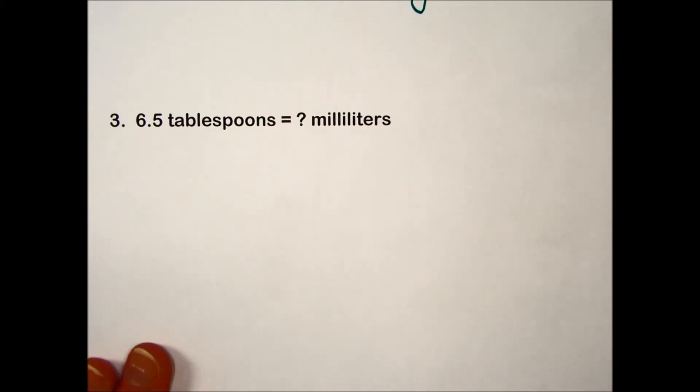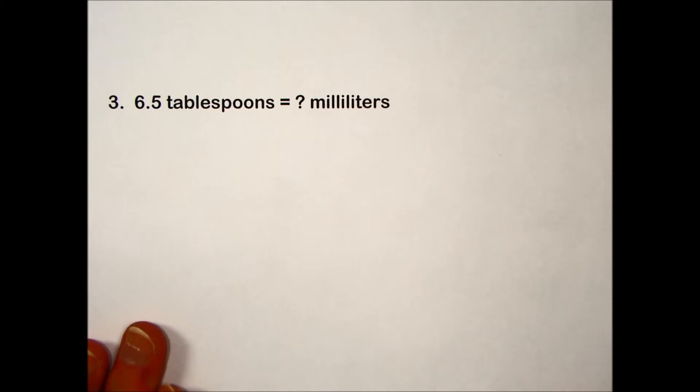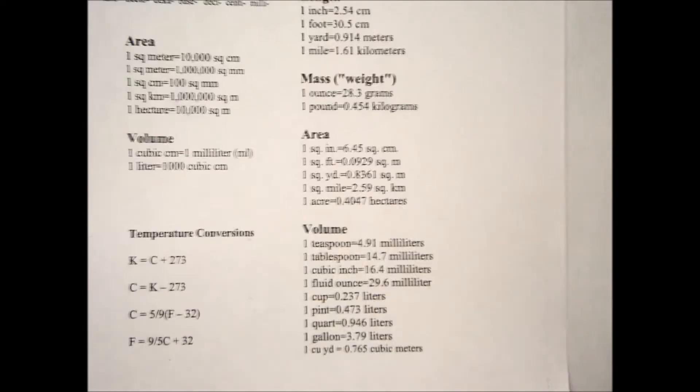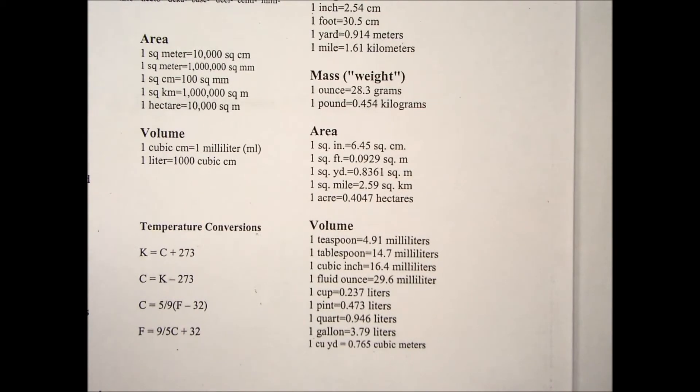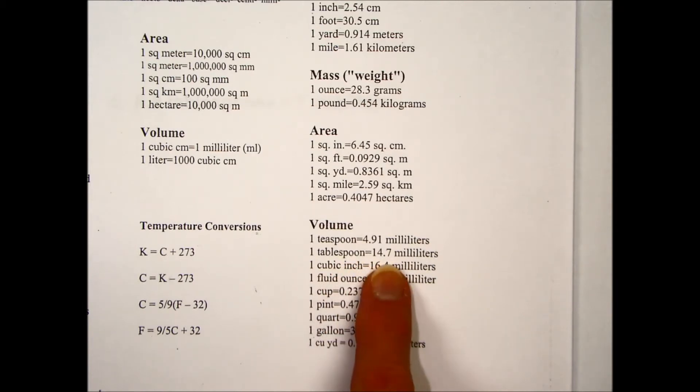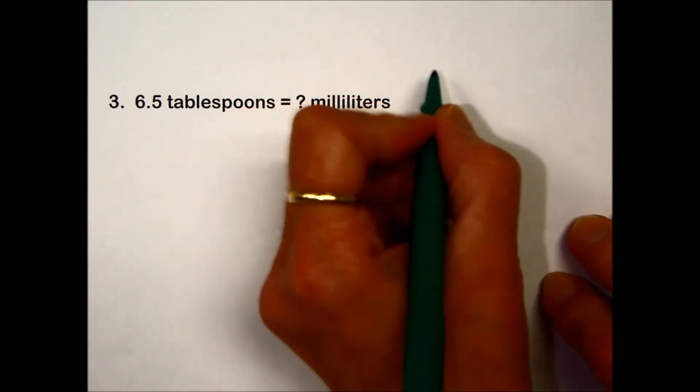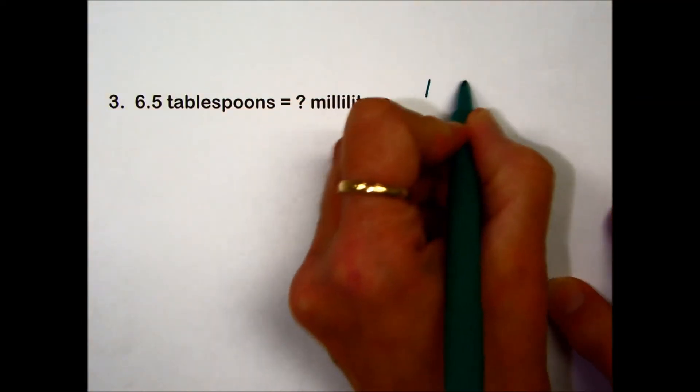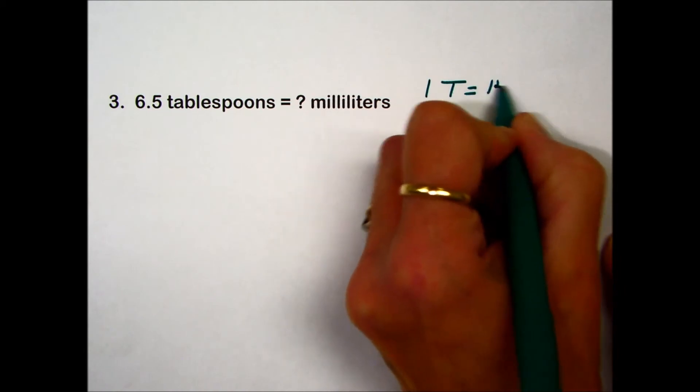Problem number three is asking us to convert tablespoons into milliliters. This is going from English to metric. We'll refer to that third column on our conversion table. And if we look under volume, the second relationship here, 1 tablespoon is equal to 14.7 milliliters, is going to be the value that we need to solve this problem.